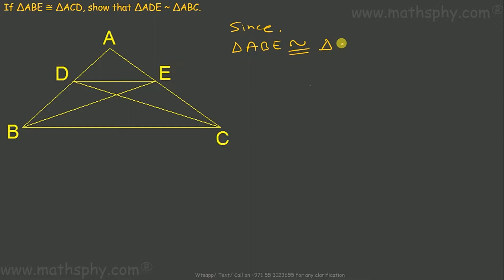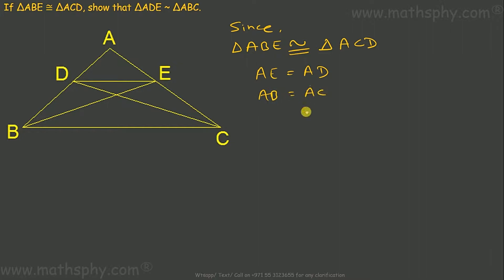Since triangle ABE is congruent to triangle ACD, from ABE I can take AE and from ACD I can take AD, so AE equals AD. Similarly, from ABE I can take AB, and it equals AC. So AB equals AC and AE equals AD.